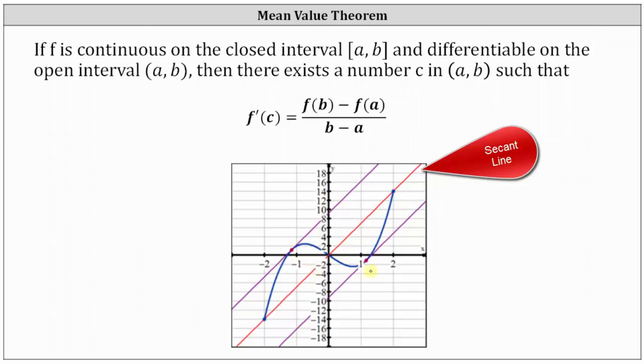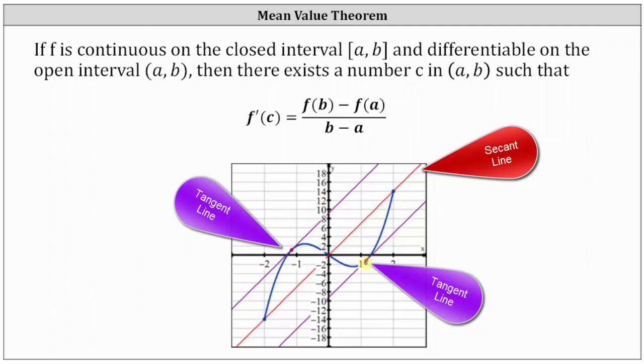And notice how on this graph there are two values of x where the slope of the tangent line or the instantaneous rate of change is the same as the average rate of change over the interval, which is the slope of the secant line. So this is the idea that we used to determine whether you could be cited for speeding or not.